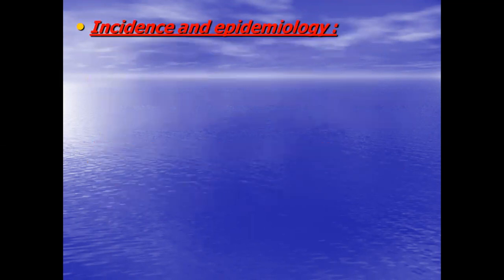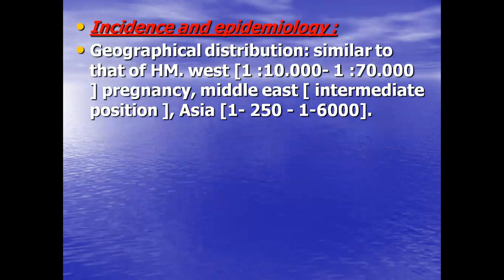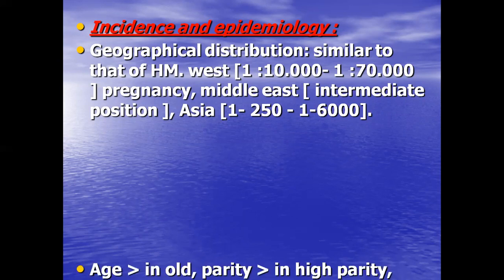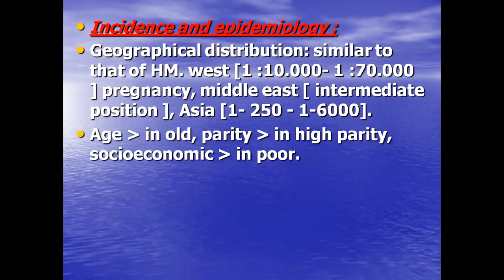Incidence and epidemiology show a geographical distribution similar to that of the hydatidiform mole. In the West, one in 10,000 to one in 17,000 pregnancies. In the Middle East, intermediate. In Asia, one in 250 and one in 6,000. Age is also a factor — more common in older age and in high poverty socioeconomic status.